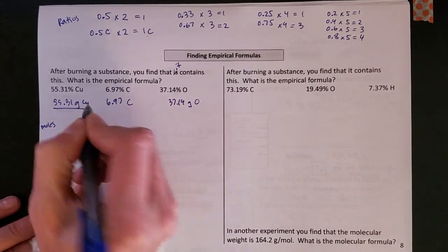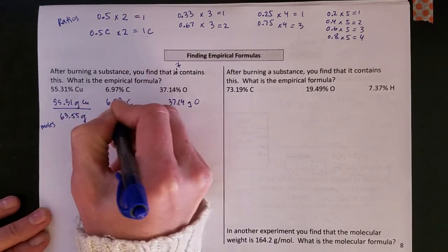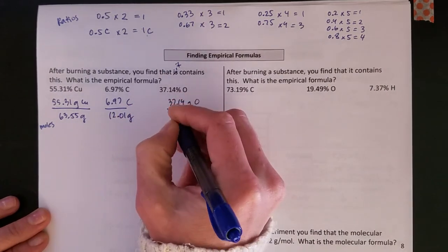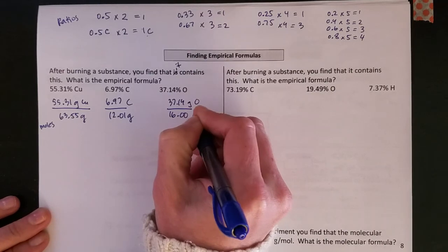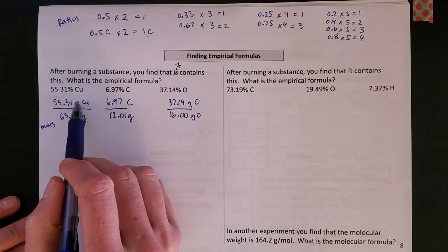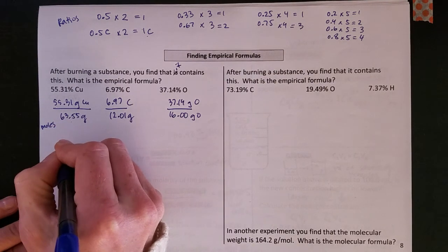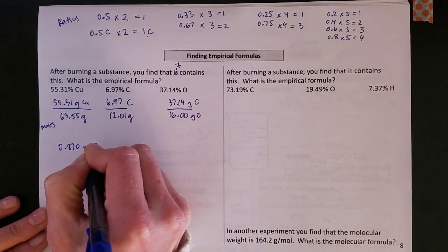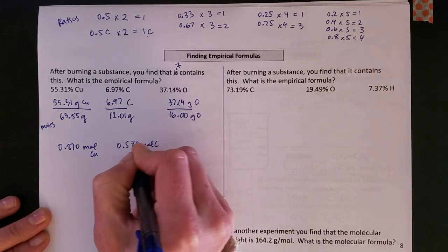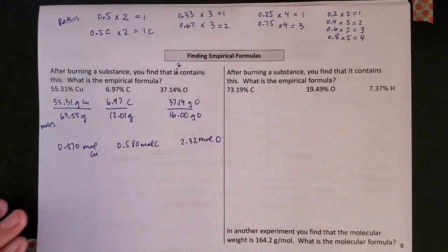So the way to do that is look up the molar masses and convert to moles. I'm not showing this exactly as a conversion here, but these are my molar masses here and I'm dividing the mass that was burned divided by the molar mass. That gives me then 0.870 moles of copper, 0.580 moles of carbon, and 2.32 moles of oxygen.